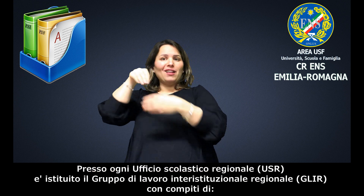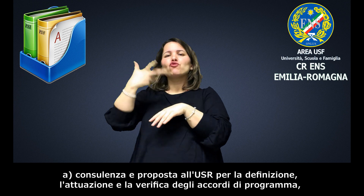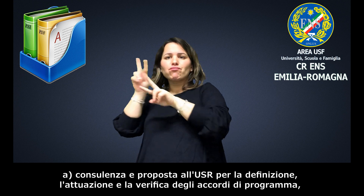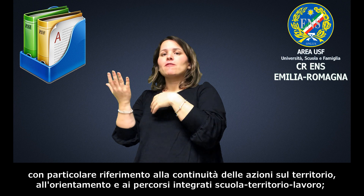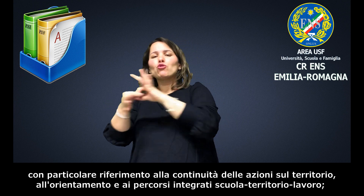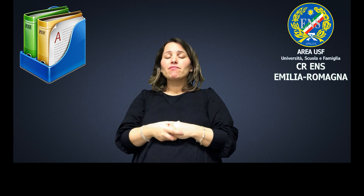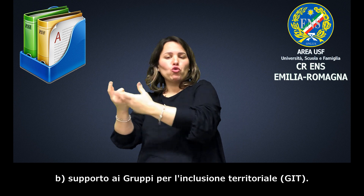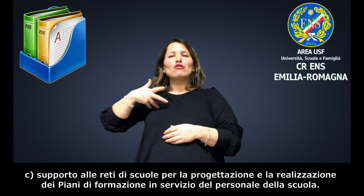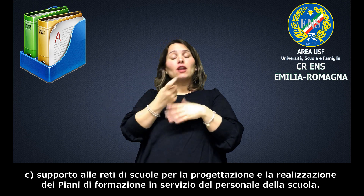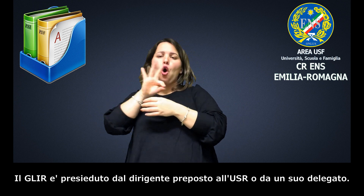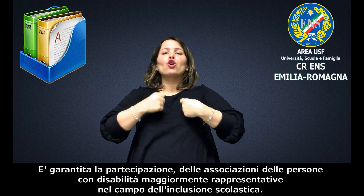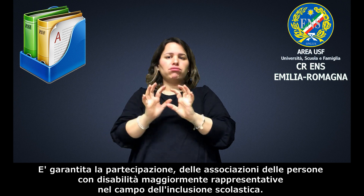Il GLIR è il Gruppo di Lavoro Interistituzionale Regionale. Presso ogni ufficio scolastico regionale, l'USR, è istituito il GLIR, con compiti di consulenza e proposta all'USR per la definizione, l'attuazione e la verifica degli accordi di programma, con particolare riferimento alla continuità delle azioni sul territorio, all'orientamento e ai percorsi integrati scuola-territorio-lavoro. Supporta i gruppi per l'inclusione territoriale, il GIT, e le reti di scuole per la progettazione e la realizzazione dei piani di formazione in servizio del personale della scuola. Il GLIR è presieduto dal dirigente preposto all'USR e da un suo delegato ed è garantita la partecipazione delle associazioni delle persone con disabilità maggiormente rappresentative a livello regionale nel campo dell'inclusione scolastica.